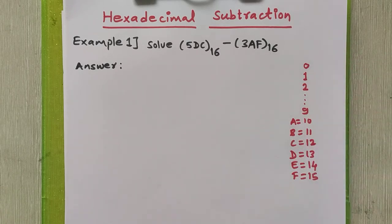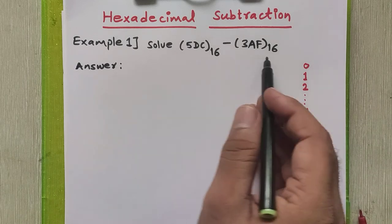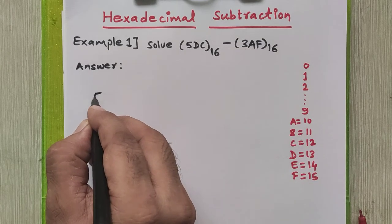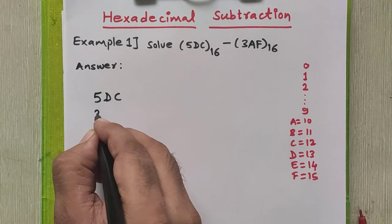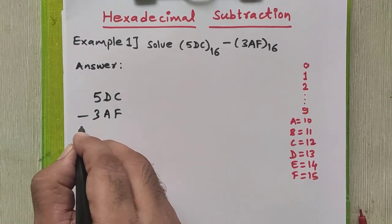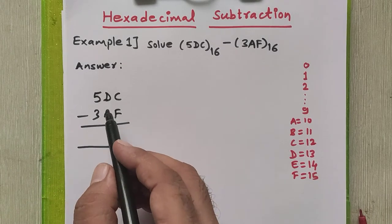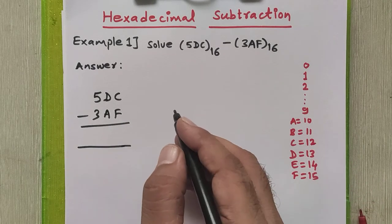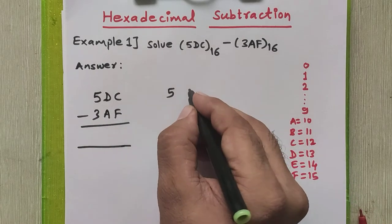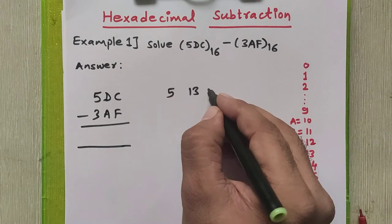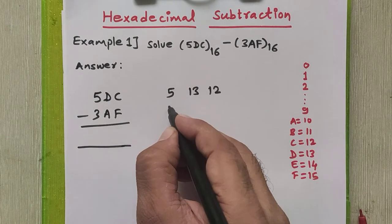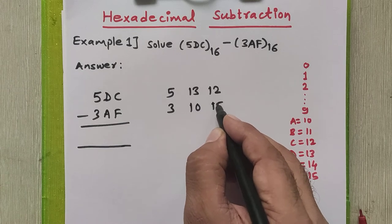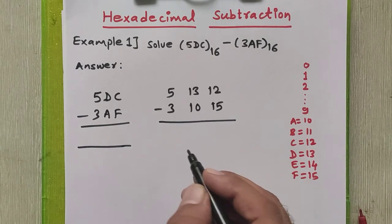The problem given to us for subtraction is 5DC minus 3AF. We write it as 5DC minus 3AF. Before performing this subtraction, we replace D and C with their exact digit values: D is 13, C is 12, A is 10, and F is 15. Now we are going to perform the subtraction directly without converting to any other base.